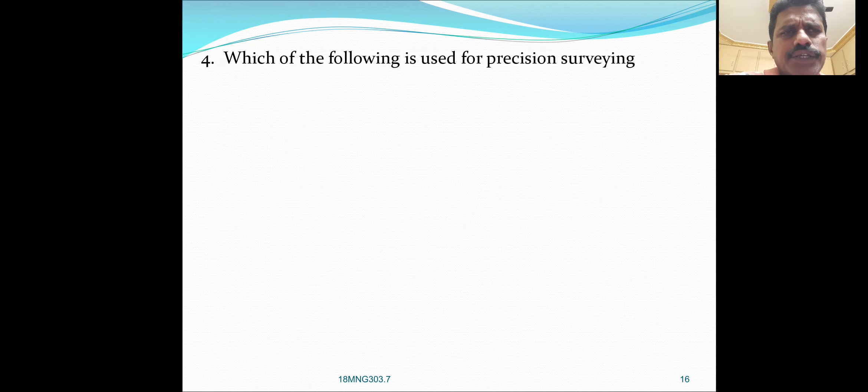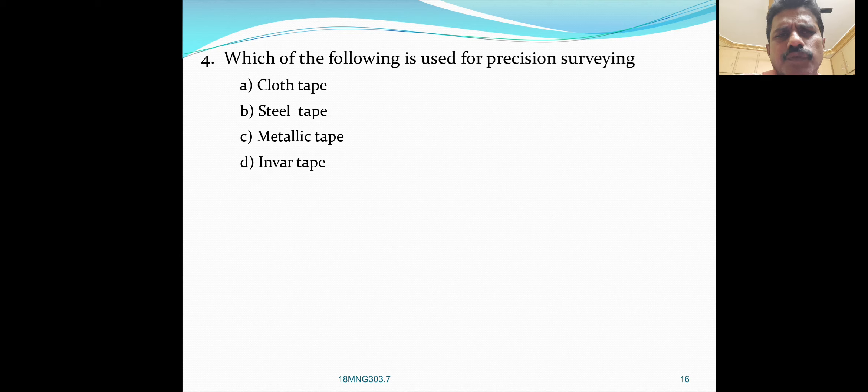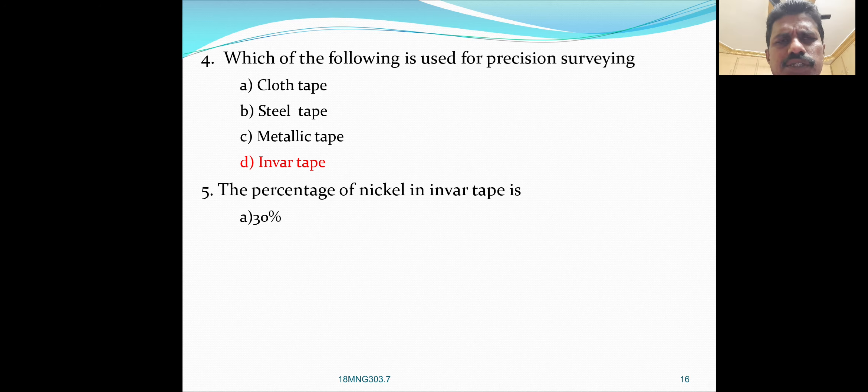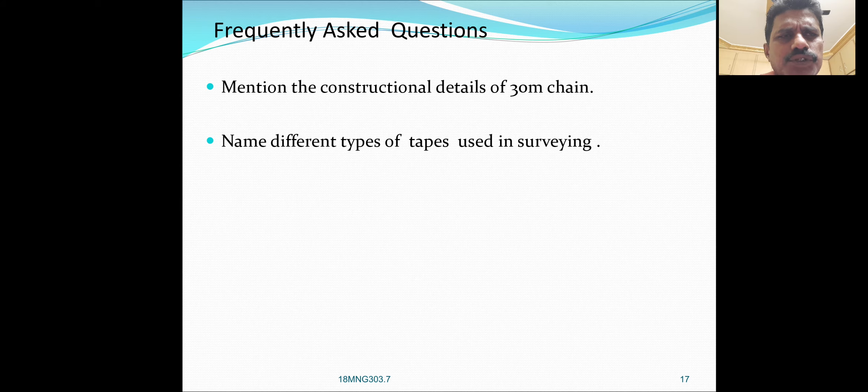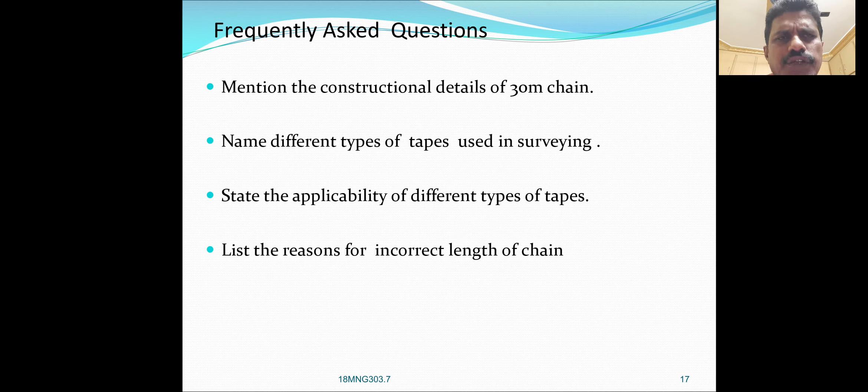Question four: invar tape is used for precision surveying. Question five: the percent of nickel in invar tape is 36 percent. Frequently asked questions include: mention the construction details of 30 meters chain, name different types of tapes used in surveying, state the applicability of different types of tapes, list the reasons for incorrect length of tape. Thank you very much.